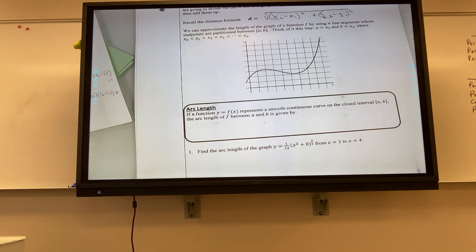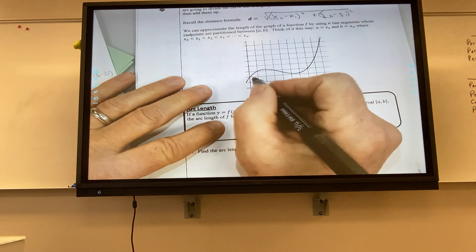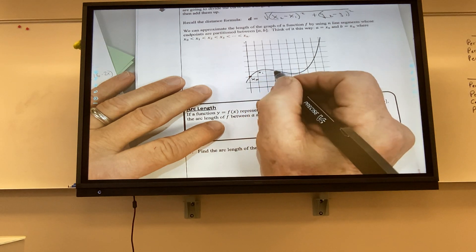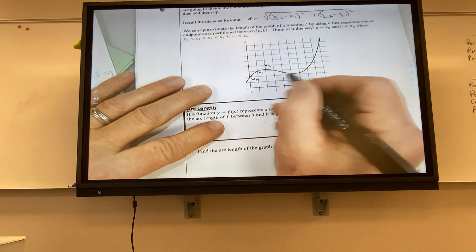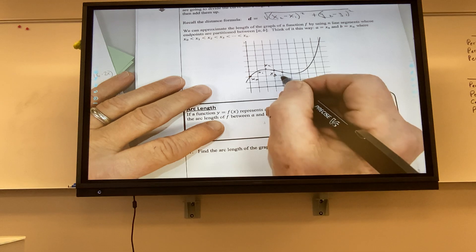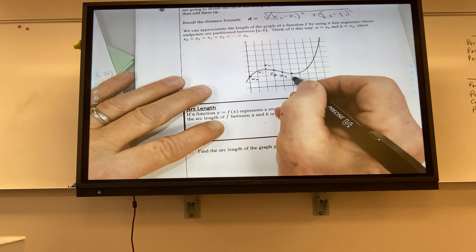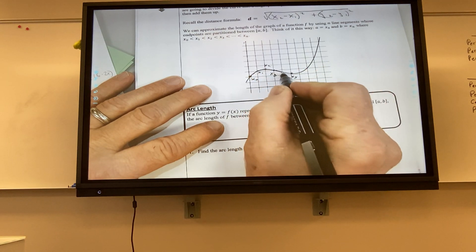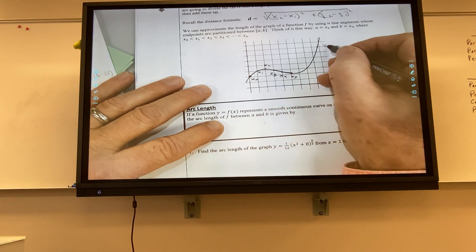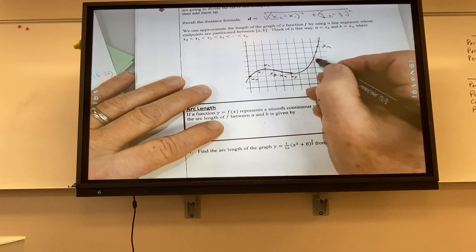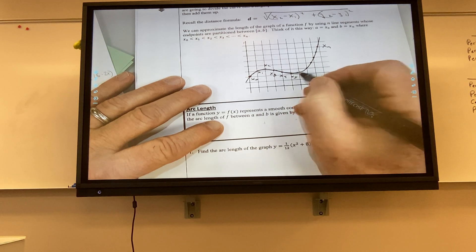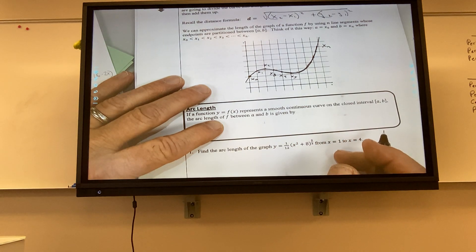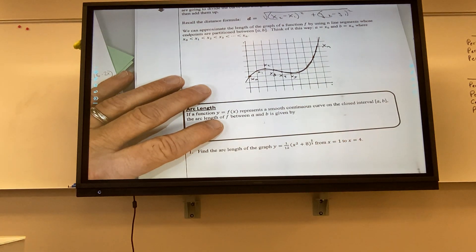And what happens is we partition this up into a bunch of little points. So like I would say, hey, this is x0. This is x1. This is x2. This is x3. This is x4. This is x5. And I compute the distances between all those. Eventually you get over here to x sub n. There may have been some more distances. And you make those distances between those smaller and smaller and smaller and add more and more points. And pretty soon you get the total distance. Is that kind of making sense to everybody?